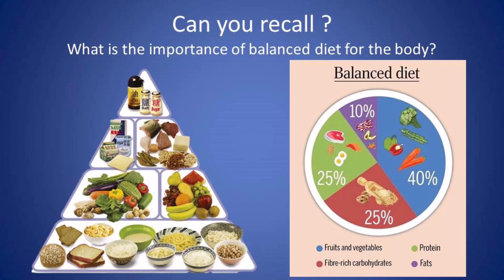The second question is: what is the importance of a balanced diet for the body? Our diet must be balanced. A balanced diet is one where all the nutrients are present in proper proportion as per the requirement of the body. Each person has different requirements. If your diet supplies all the required nutrients, then that is a balanced diet.